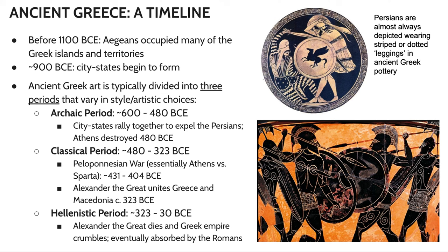Ancient Greek art, as we study it in the AP curriculum, is typically divided into three periods that vary in style and artistic choices. The ancient Greeks weren't formally saying they were in the Archaic or Classical period — these periods were determined by art historians much later. The divisions between the periods were marked by significant historical events. In the case of the Archaic to Classical period, the catalyzing event was the destruction of Athens in 480 BCE, when the Persians retaliated against the invasion of Persia.